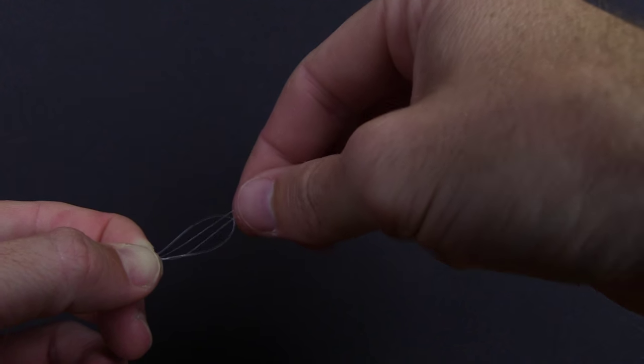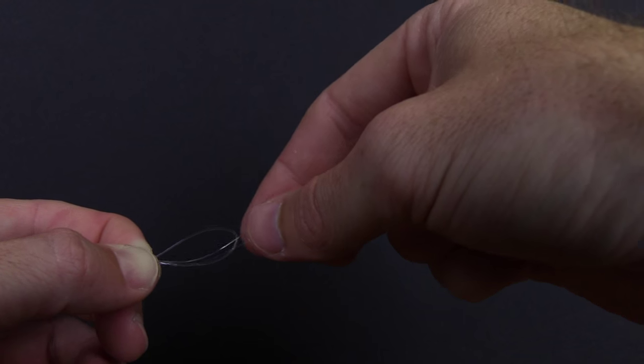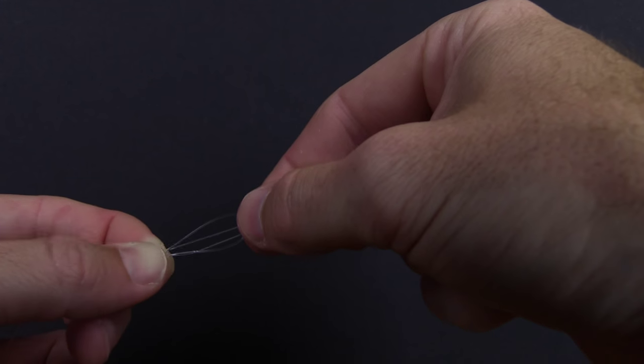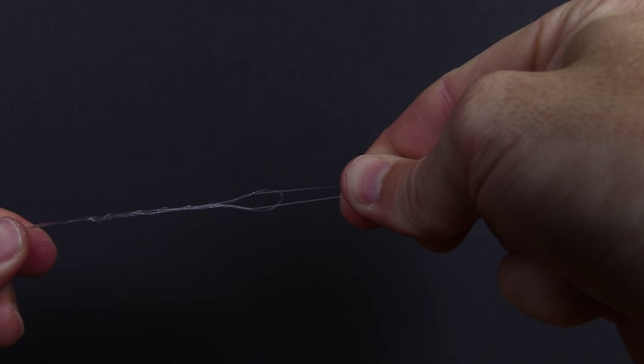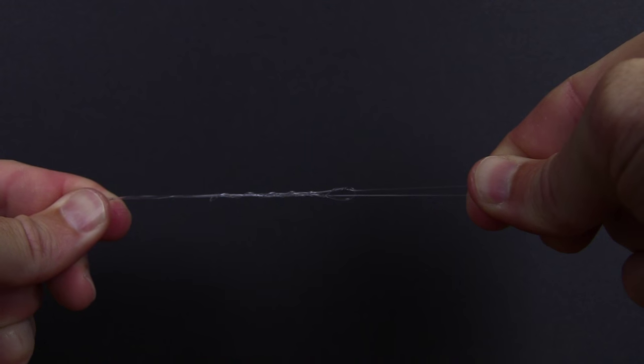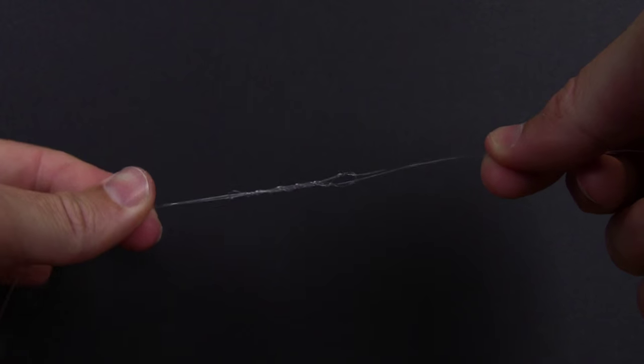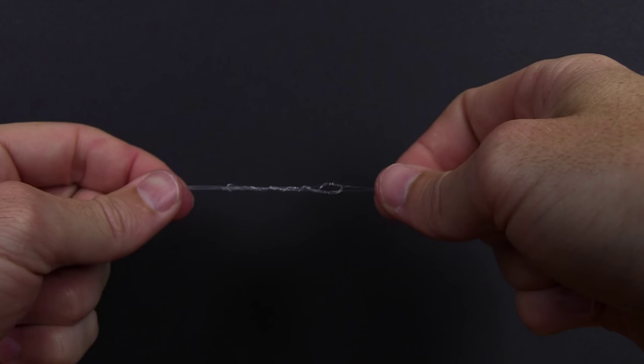That is what we want, to be on the same side. Now we're going to pull them tight and you'll see it'll get smaller and smaller. I usually get to about here and I'll wet the line so the line doesn't damage itself.